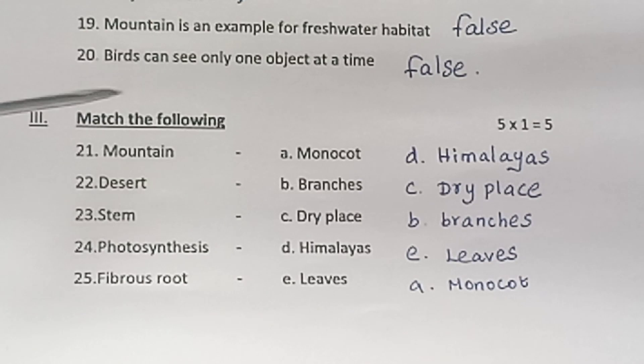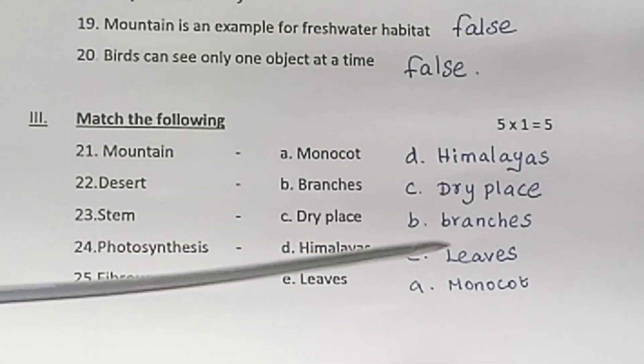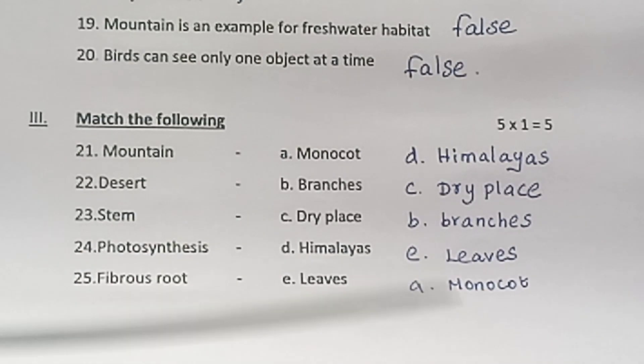Numeration 4. Match the following. 5 into 1 is equal to 5. Mountain - Himalayas. Desert - Dry place. Stem - Branches. Photosynthesis - Leaves. Fibrous roots - Monocot.